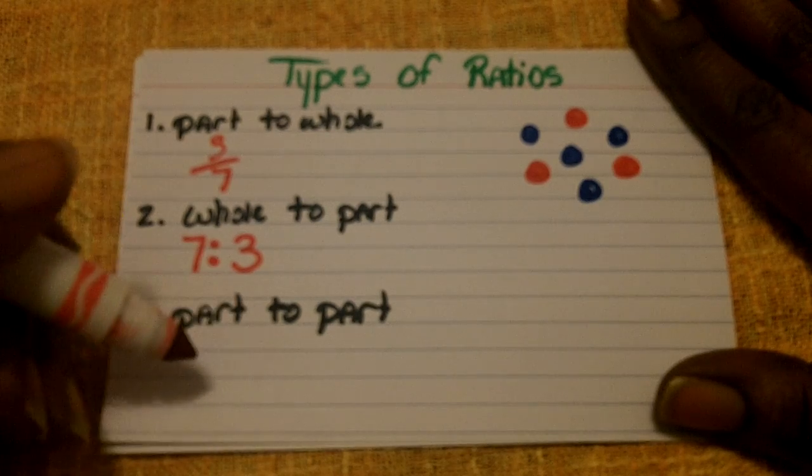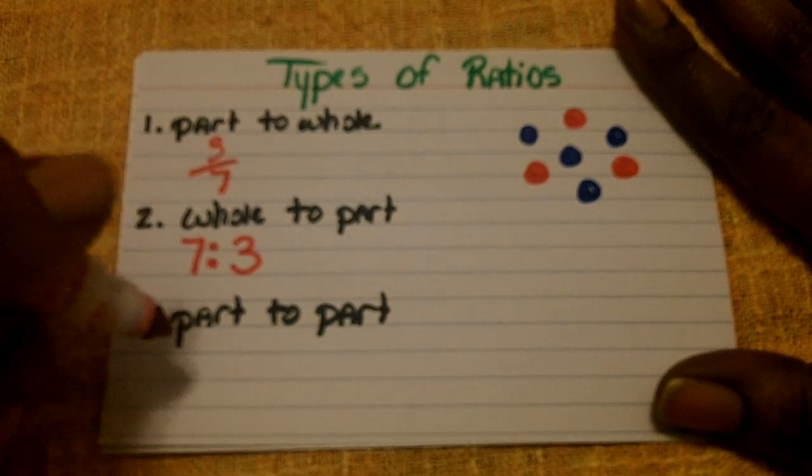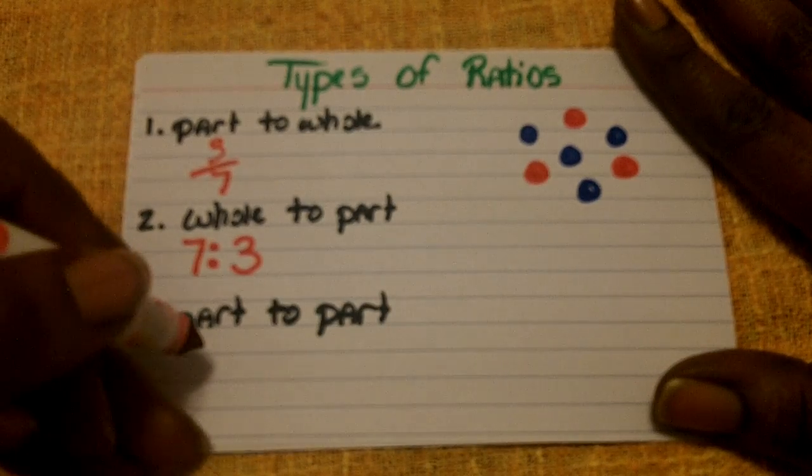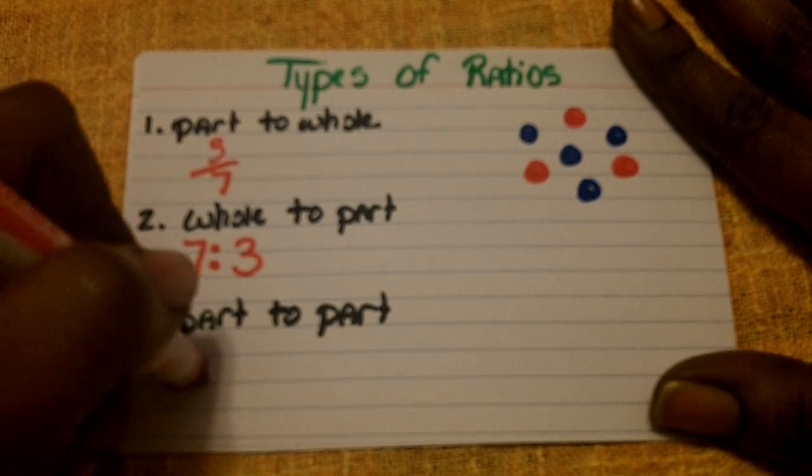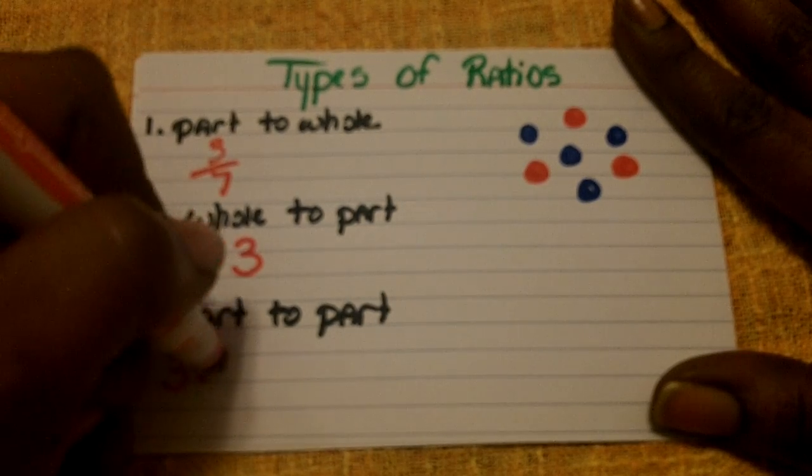Finally, part to part. That is when you are comparing different parts of the sample. In this case, I'm comparing the reds, which is three, to the blues, which is four.